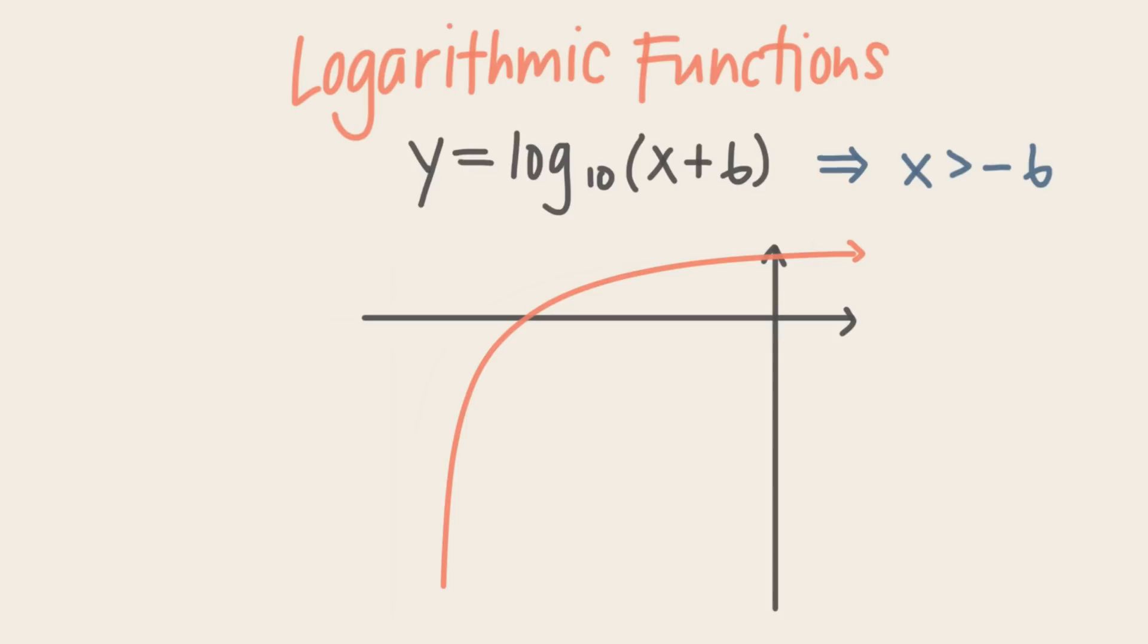So for y equals log base 10 of x plus 6, the vertical asymptote will be at negative 6 because at this point, the input to the function would be log base 10 of 0, which is undefined. On the graph, the curve would never cross the line at x equals negative 6.